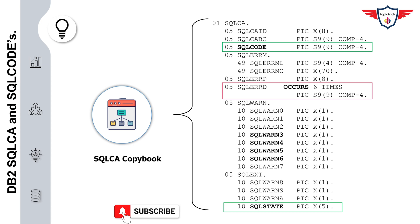Similarly, you have SQLERRD(2), SQLERRD(4), SQLERRD(5), and SQLERRD(6). You can use these variables to obtain vital statistics about SQL statement execution.